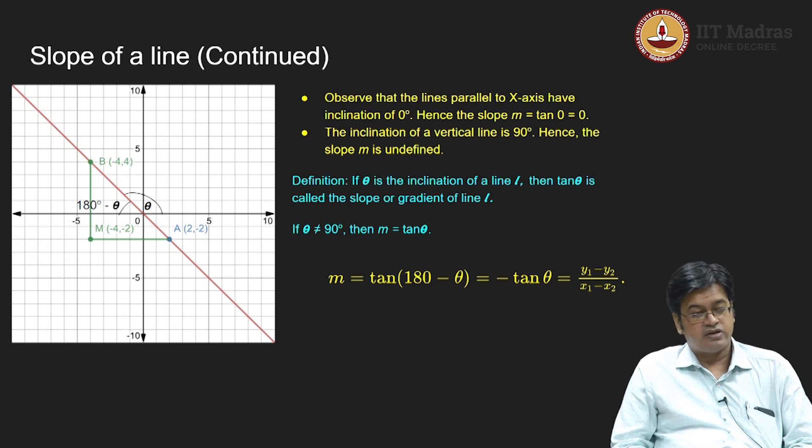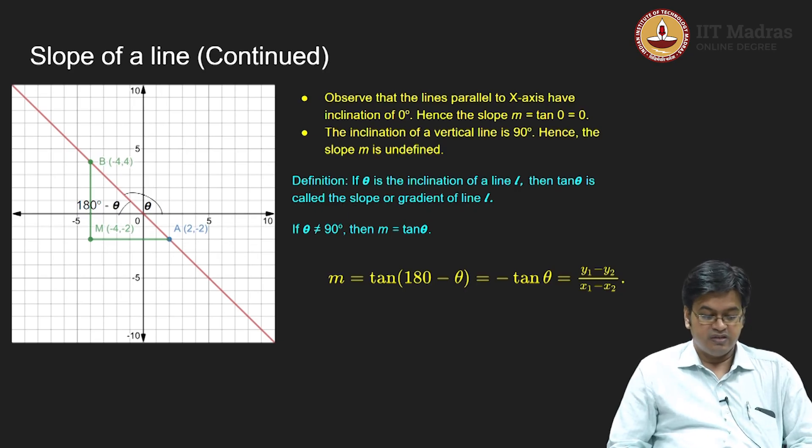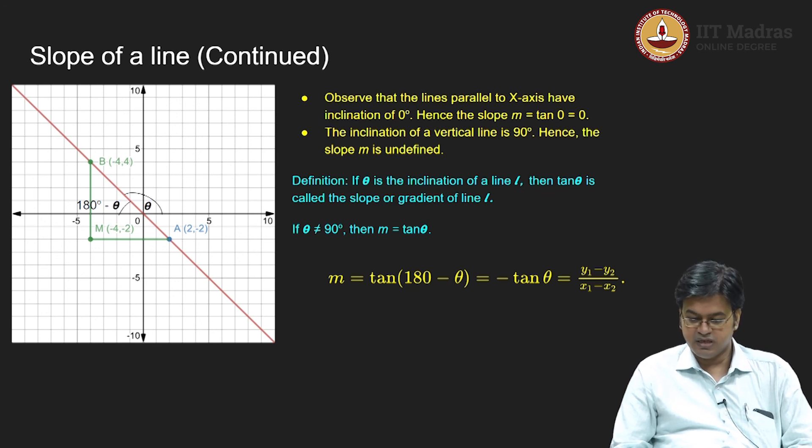So m is tan of 180 minus theta. Now what is tan of 180 minus theta? If you use simple trigonometric formula, you will get tan of 180 minus theta is nothing but minus tan theta. But what is minus tan theta? You can easily see what is minus tan theta which will be y1 minus y2 upon x1 minus x2. So in short, our formula for slope is consistent no matter which definition we use. Therefore a slope of a line is uniquely determined given a line.